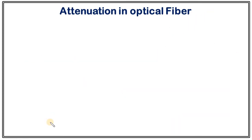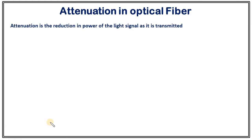Attenuation in optical fiber. Attenuation is the reduction in power of the light signal as it is transmitted through an optical core. This is a very important characteristic because it will decide how long an optical signal will transmit, or how long it will move in the optical core before getting attenuated completely.